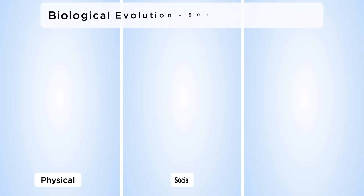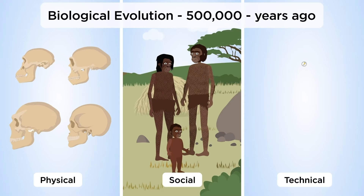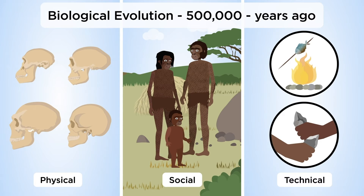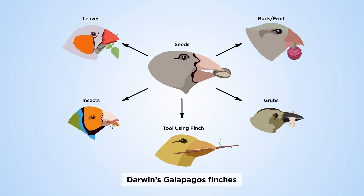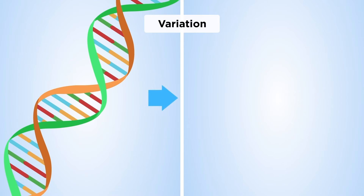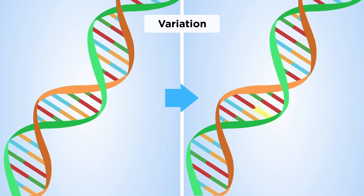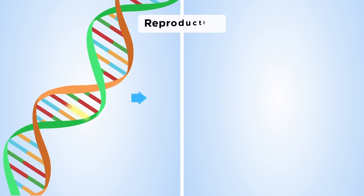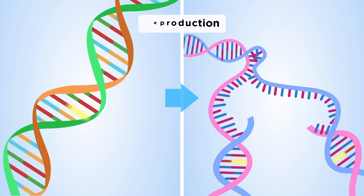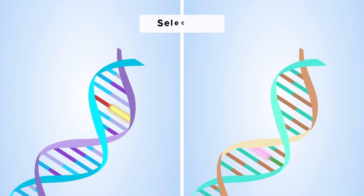Biological evolution describes the process by which living things change over time through unconscious genetic change. Genetic mutations cause random changes, which can be advantageous for survival. These mutations can be reproduced and selected, or not, to be passed on to the next generation.